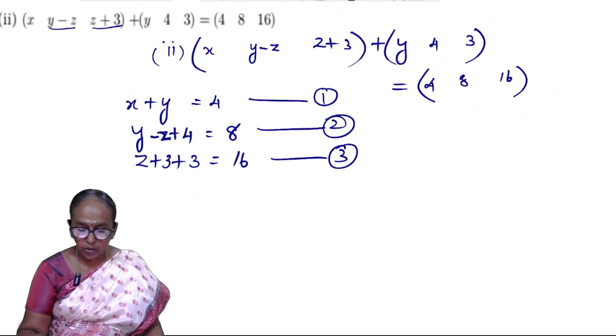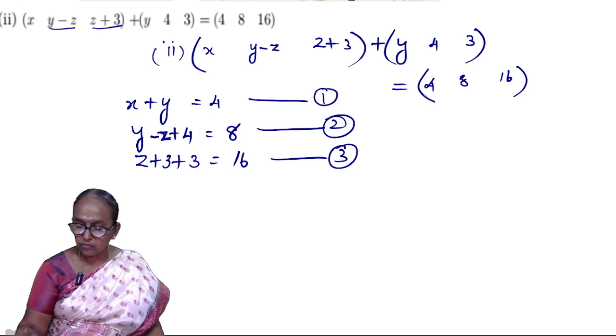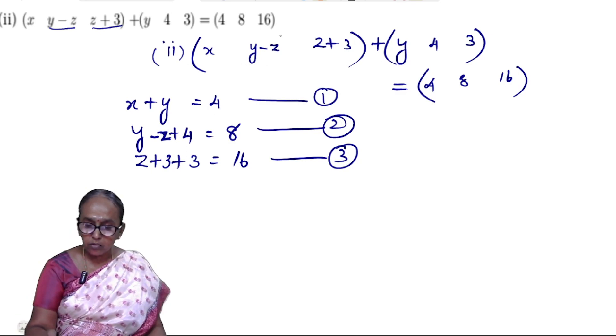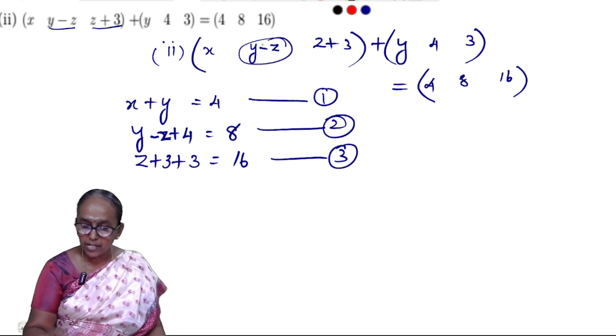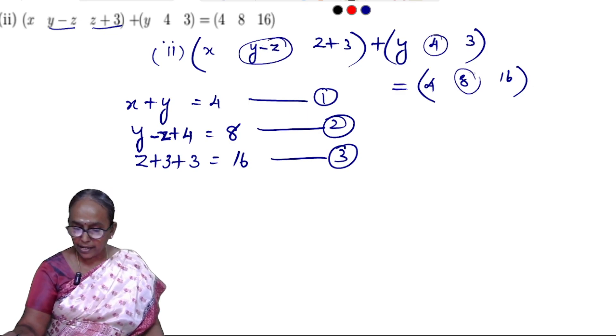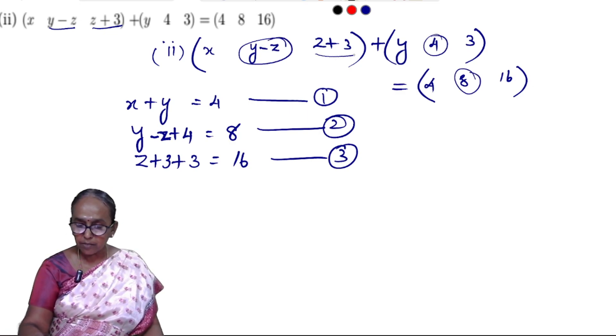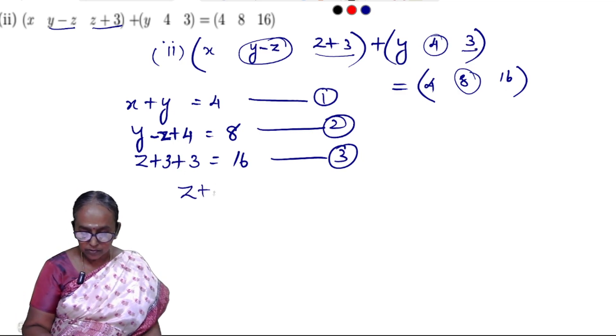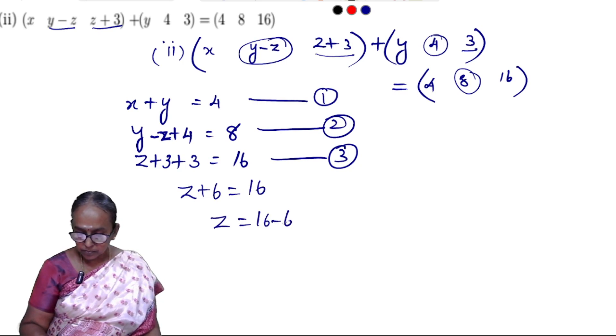X plus Y is equal to 4. Y minus Z plus 4 is equal to 8. Third is Z plus 3 plus 3 is equal to 16, so the third value, Z value is equal to 8.